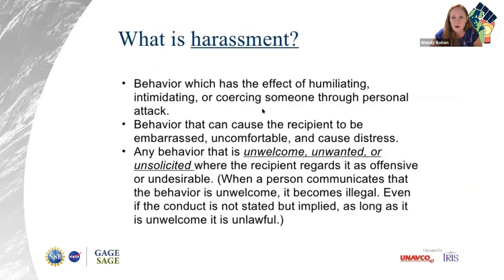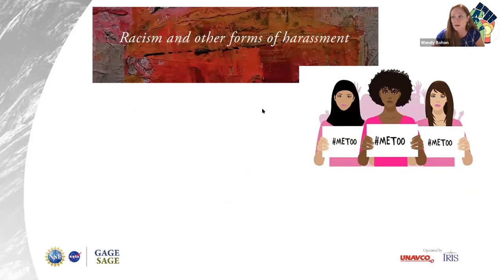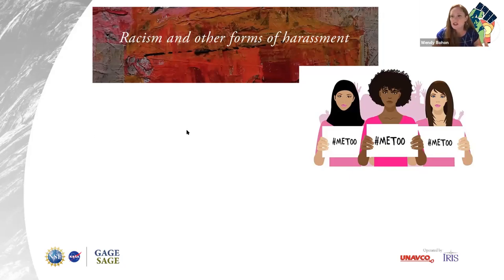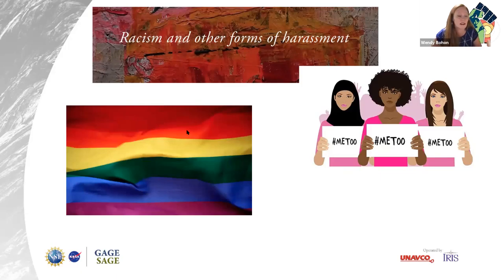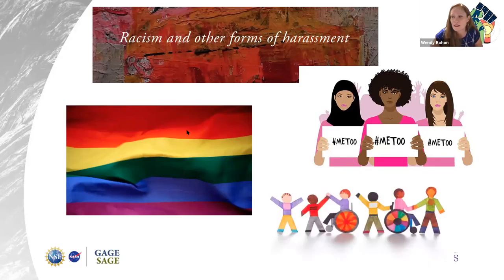Harassment is so prevalent in STEM. It is behavior that has the effect of humiliating, intimidating, or coercing someone through a personal attack — causing the recipient to feel embarrassed, uncomfortable, and stressed. It's behaviors that are unwelcome, unwanted, and unsolicited. When a person communicates that behavior is unwelcome, that's when harassment becomes illegal. There are lots of different kinds, including racial harassment. People of color deal with racial harassment, and women of color deal with both racial and gender-based harassment — called a double bind. Discrimination and bias don't just affect gender and race — they include homophobia, transphobia, and discrimination against people with disabilities.